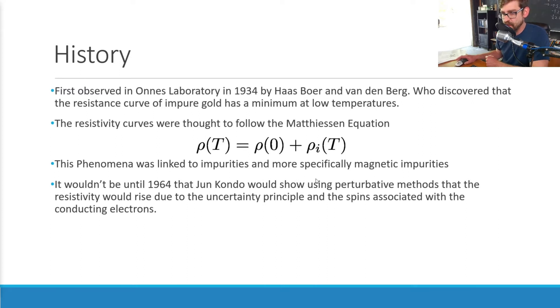This phenomenon was linked to impurities in metallic alloys, but more specifically, it was linked to magnetic impurities. And then this drove people crazy for a long time, and it wouldn't be until about 30 years later that June Kondo would show using perturbative methods that the resistivity would rise due to the uncertainty principle and the spins associated with conducting electrons.